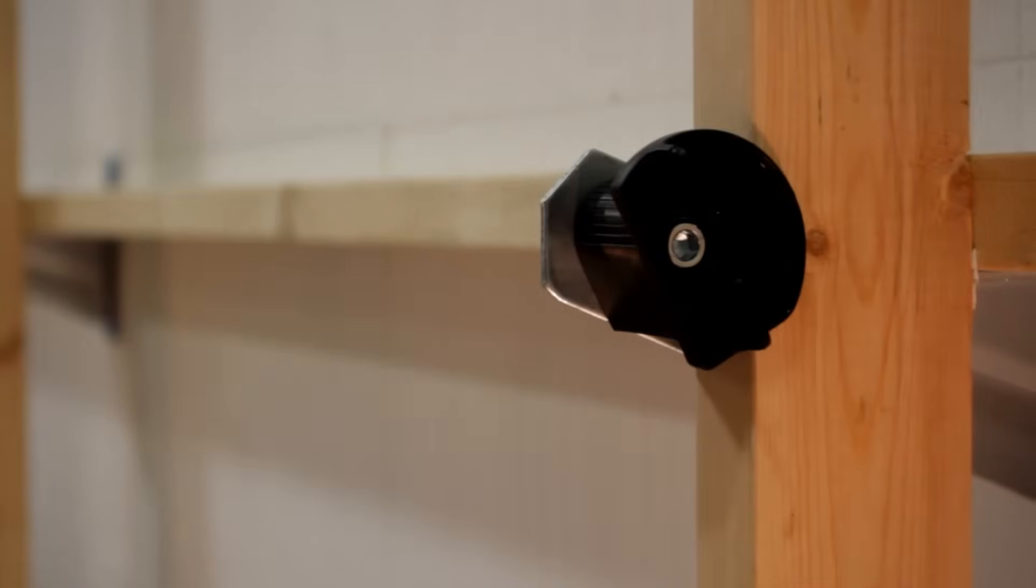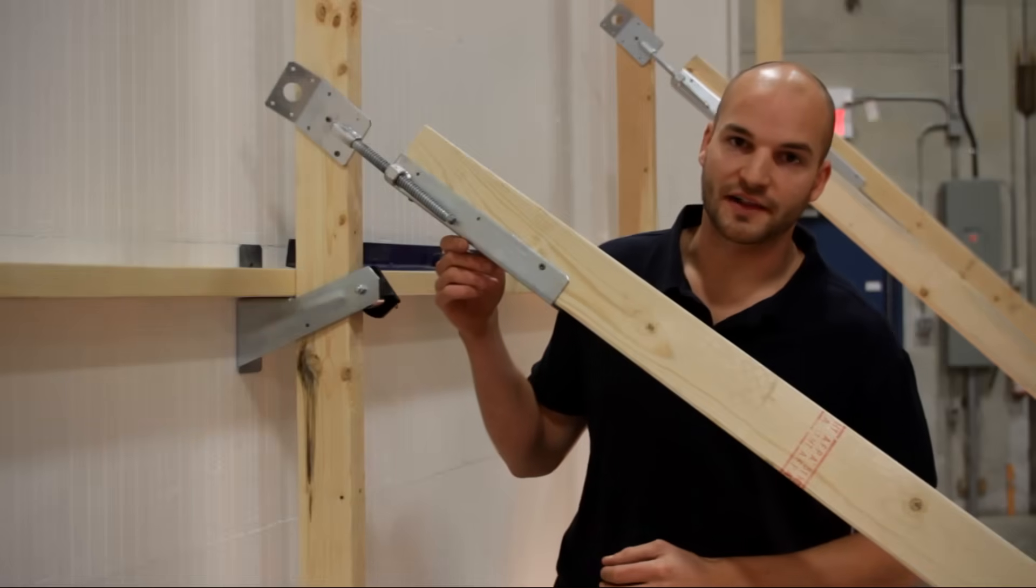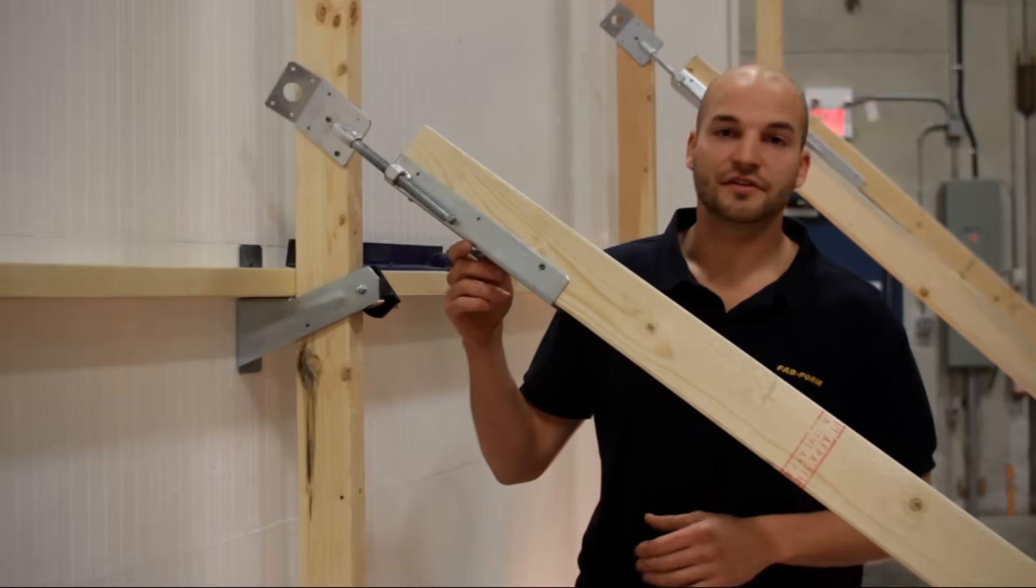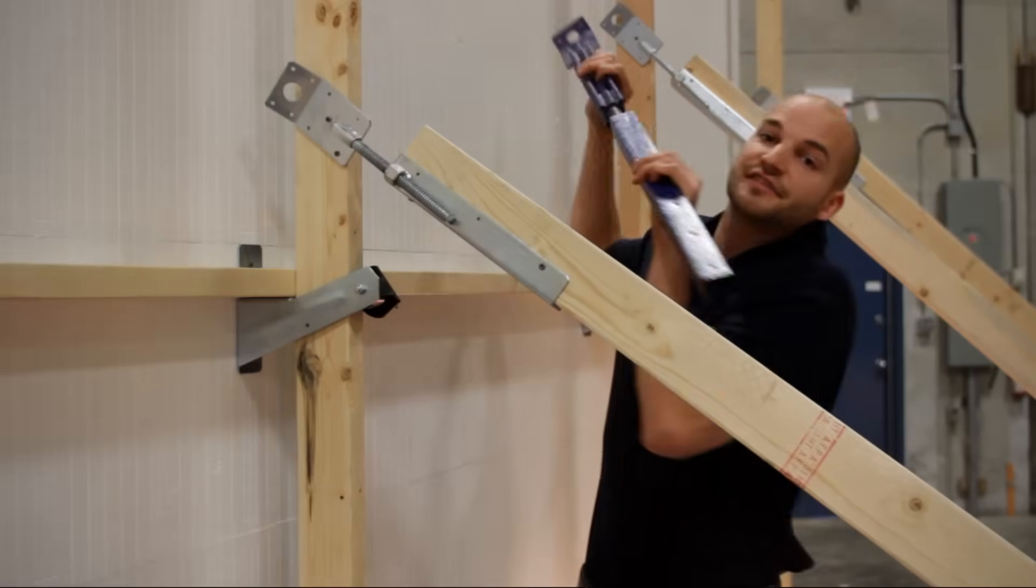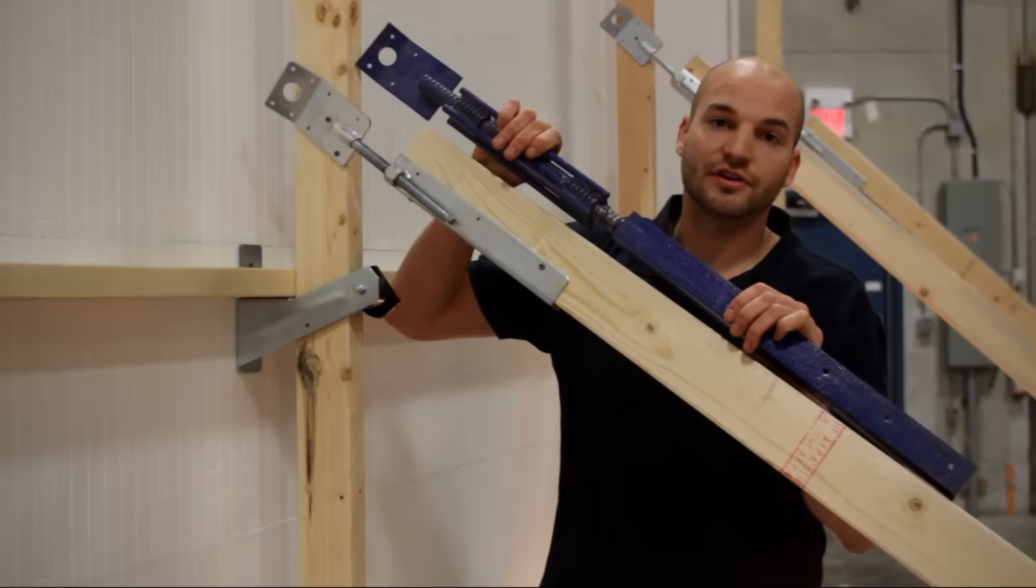To adjust the plumb on our walls, we have our Zuckel wall aligner. Now the Zuckel is specifically designed for ICF walls and is half the weight and half the size of a traditional turnbuckle.